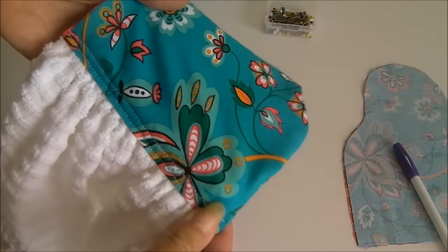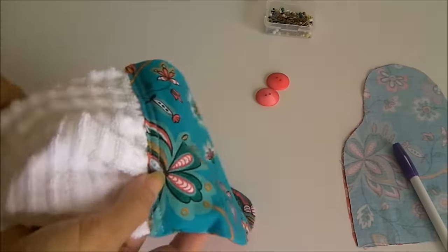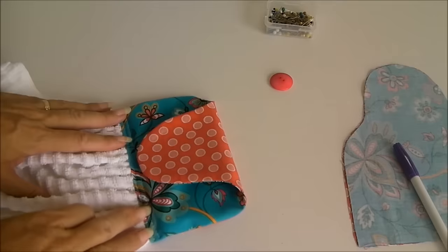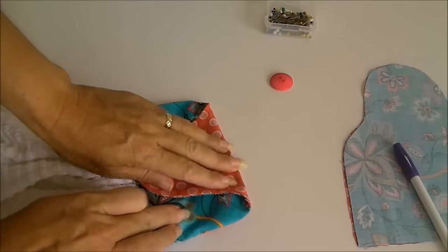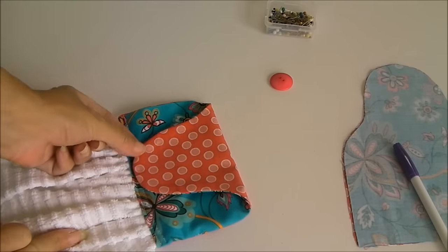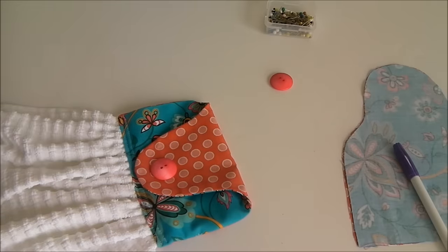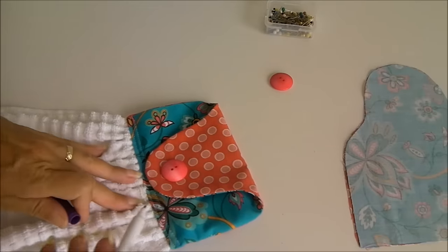So my towel is now sewn securely in place and it's time for us to think about the button and buttonhole. So I've got my button here and lying it down, I think I'm going to want it to come around about here once it's buttoned down. So if I put my button where I think I want it to be, say there, and I'm just going to make a mark with my invisible marker.